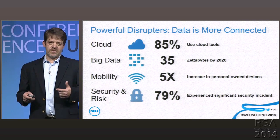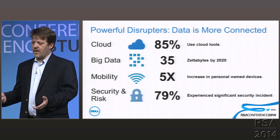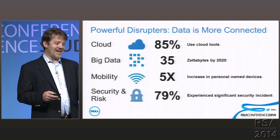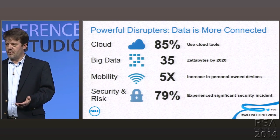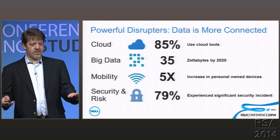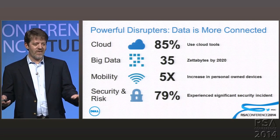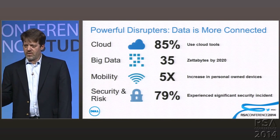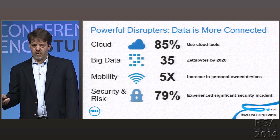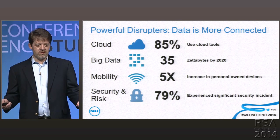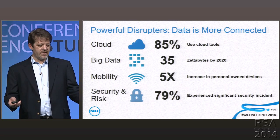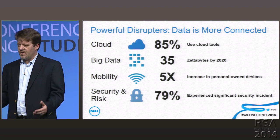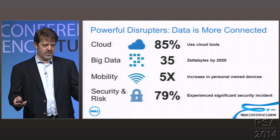Some of the disruptors we're seeing: 85% of employees today are using cloud tools of some sort. There are going to be 35 zettabytes on or in the cloud by 2020. Mobility is growing 5x — pretty soon the majority of devices within your corporate network are going to be employee-owned. How do you deal with that when it comes to your data? And 79% of us have said yes, we've been breached — but I can tell you it's been 100%. Some of us just don't know it yet.